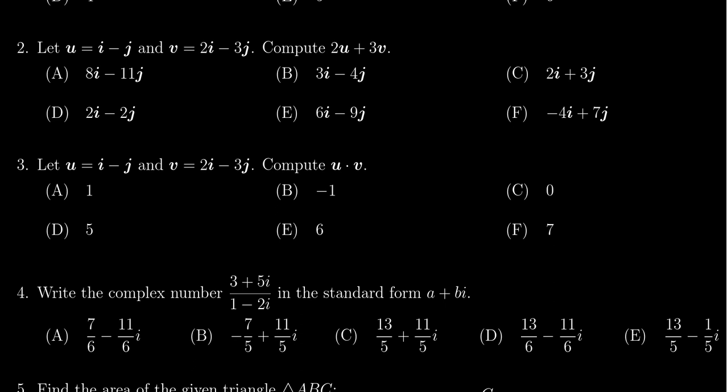And we're asked to compute the linear combination 2u plus 3v. So to do that, we're going to take 2 times u, which is i minus j here. And then we're going to take 3 times v, which is 2i minus 3j.